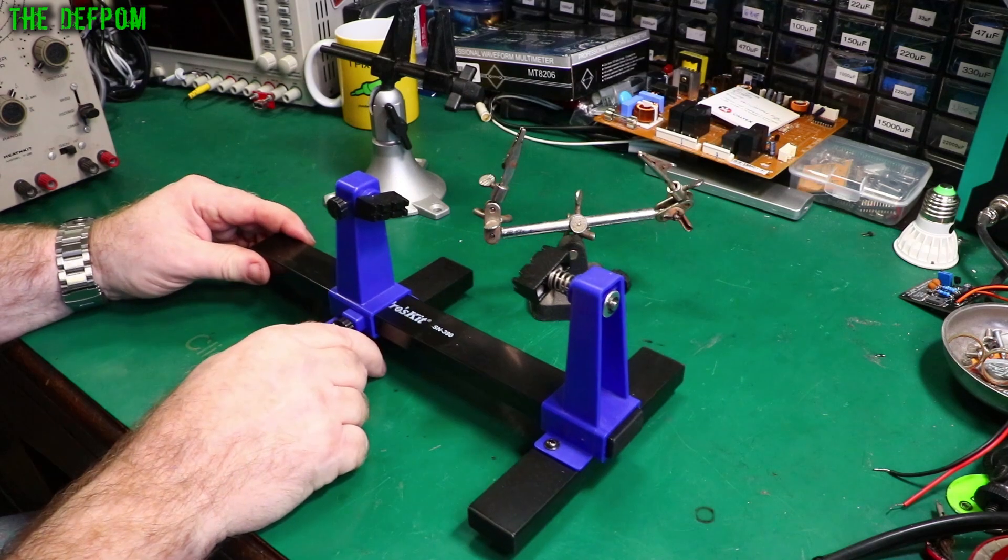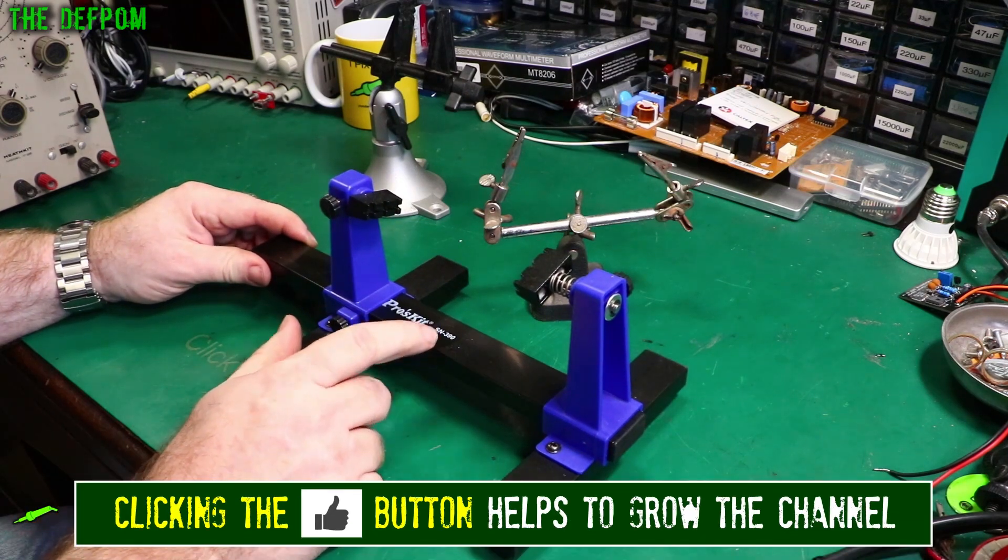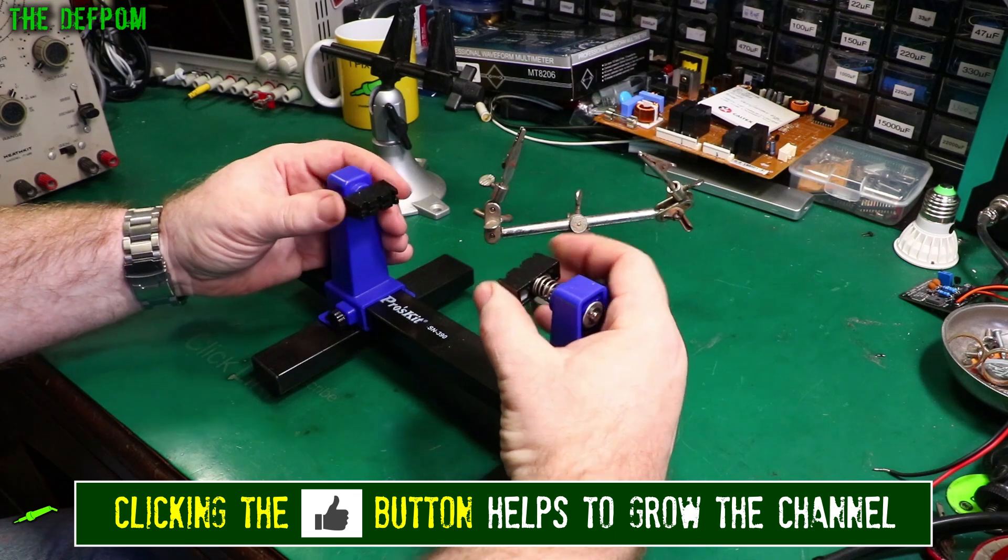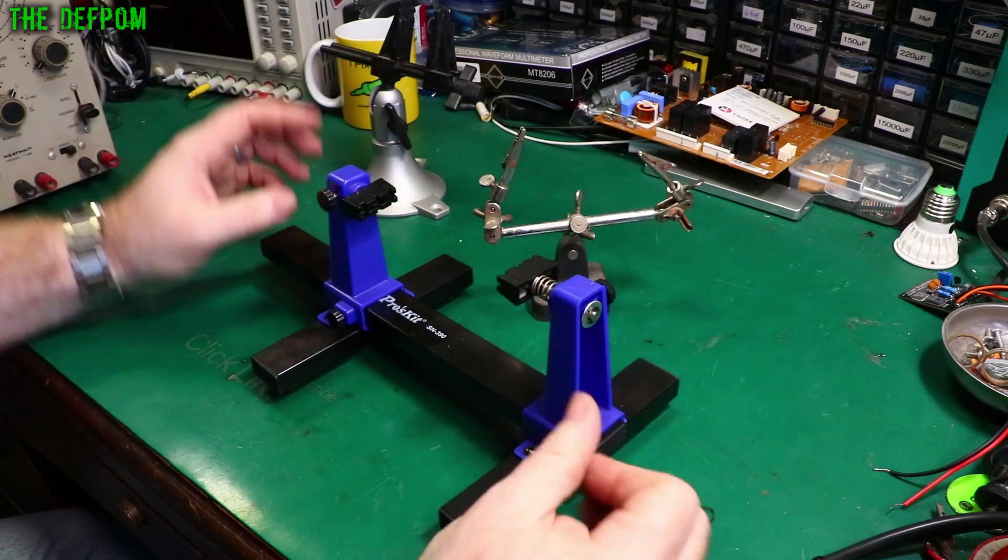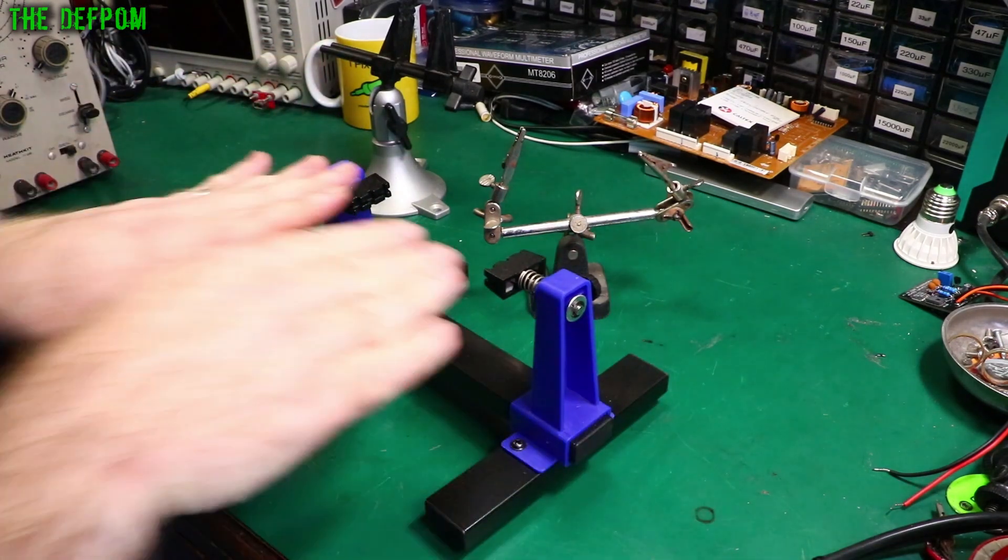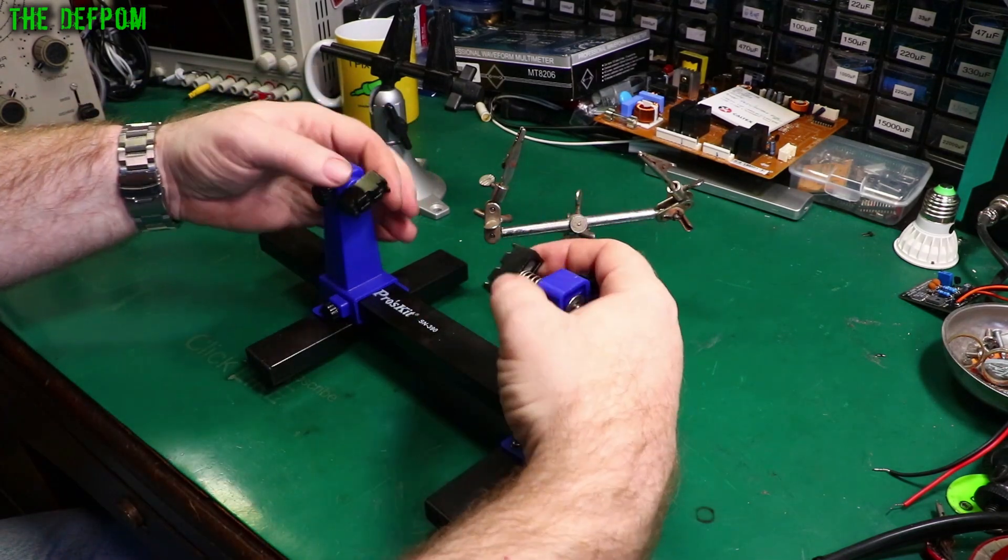I did this in the mailbag not long ago actually. It's a Proskit SN390. There'll be links down below for those. It's got a little sponge section here so it helps you push the board in and out a bit more easily. If you've got a board you can stick it in there and you can also flip it over, working both sides.